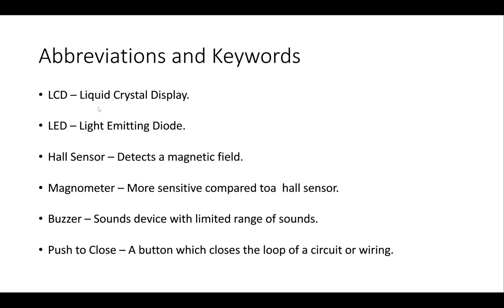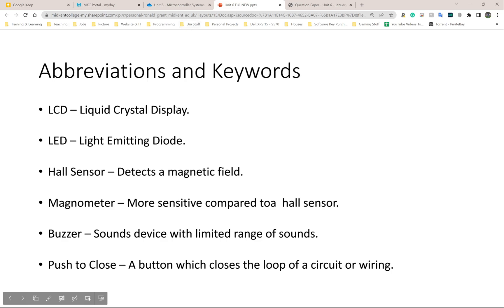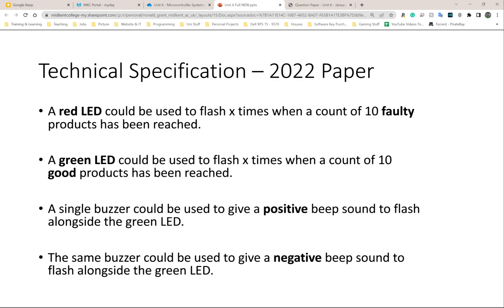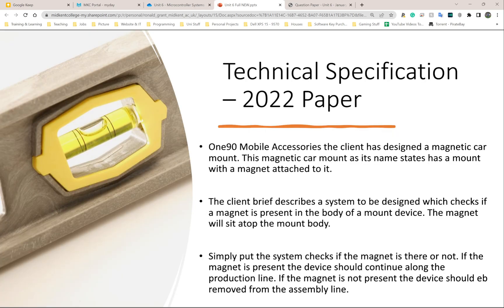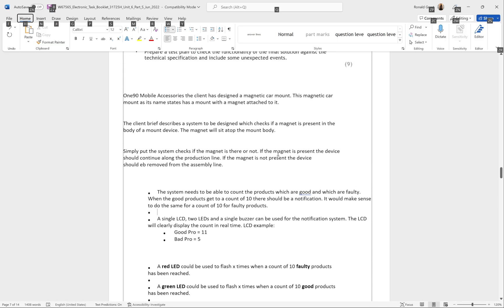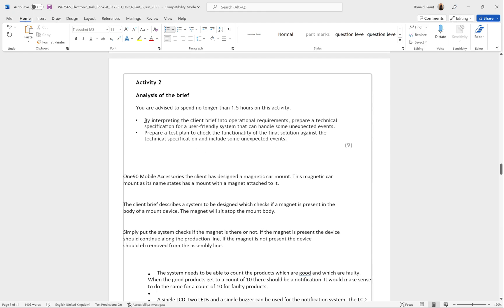My abbreviations include: LCD — Liquid Crystal Display; LED — Light Emitting Diode; Hall Sensor — detects a magnetic field; Magnetometer — more sensitive compared to a Hall sensor; Buzzer — sound device with limited range of sound; Push-to-Close — a button which closes a loop of a circuit or wiring diagram. This is what I would actually do for my Activity 2. Everything described here would simply be bullet-pointed and copied into Activity 2 as the technical specification.